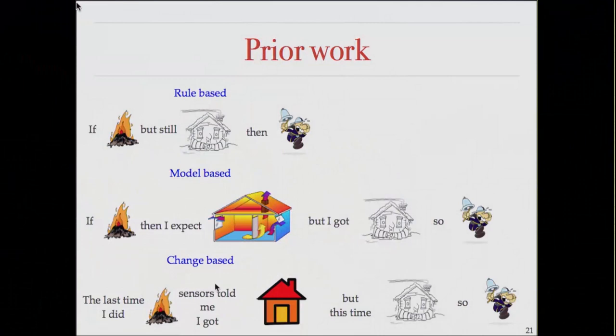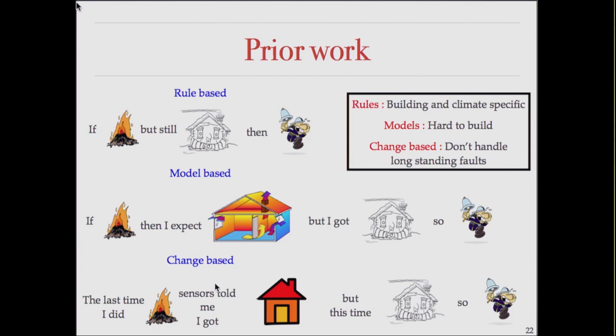What is wrong with all of these? Rule-based methods have to be fairly building- and climate-specific — what triggers an alarm in one building may be normal in San Diego, for example. Models tend to be very, very hard to build. And the problem with change-based methods is that they don't handle what I'd call long-standing faults. When a building is built there are often configuration faults, and no change-based method can detect these because they never change — they're always wrong.